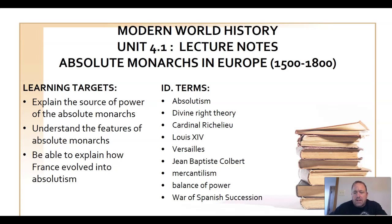Before we get started, I wanted to do a little bit of background. Earlier in this course we discussed two specific time periods: the Middle Ages and the Protestant Reformation. During the Middle Ages, power was divided throughout Europe. Within each individual country, power was divided among three groups: the monarchy, the nobility — who were the large landowners — and the Catholic Church. Each one of those groups wielded a certain amount of decision-making authority.